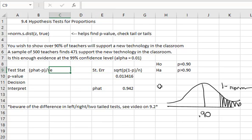So for our test statistic, we'll say equals, open a parentheses, our p-hat minus the hypothesized proportion of 0.90, close the parentheses, divided by the standard error, and I can just select that cell. When I hit enter, we find our test statistic is 3.13.